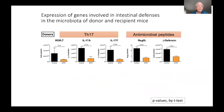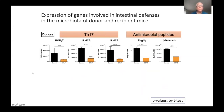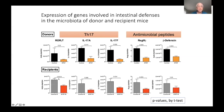Next we asked: are there immunological signals? Looking at expression of genes involved in intestinal defenses — genes related to TH17 or antimicrobial peptides downstream of TH17, like transcription factors and cytokines — in control mice we have high levels of expression of these genes, but in mice that received antibiotics the levels are lower. In recipient germ-free mice that received the perturbed microbiota versus control microbiota, we see the same trends — the altered microbiota is transferring the immunological phenotype as well.